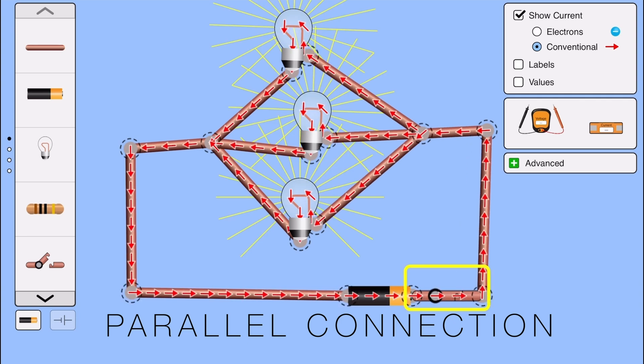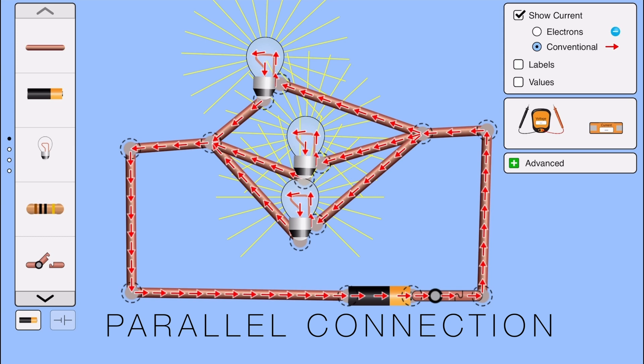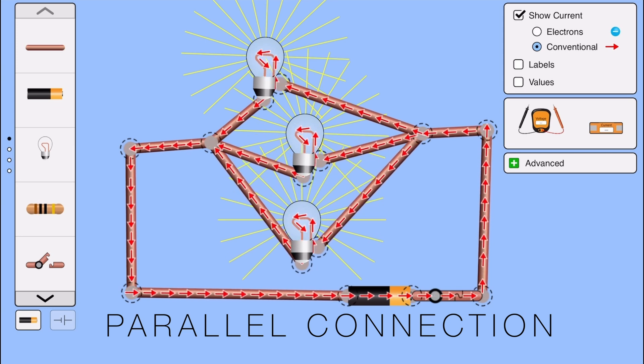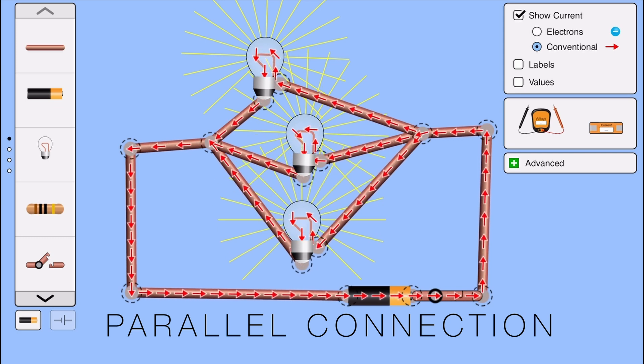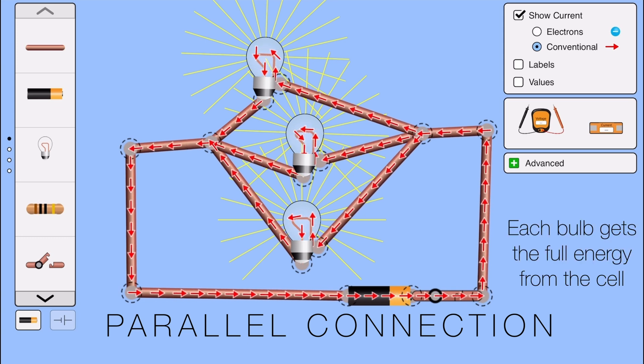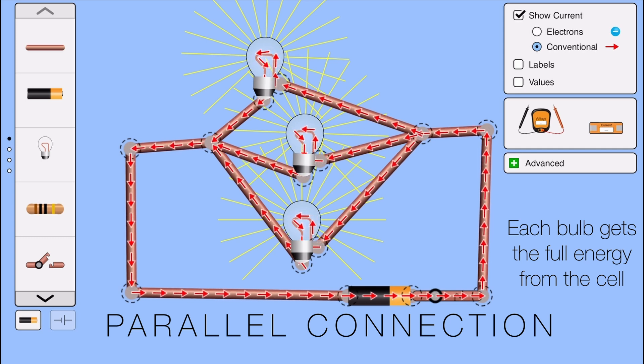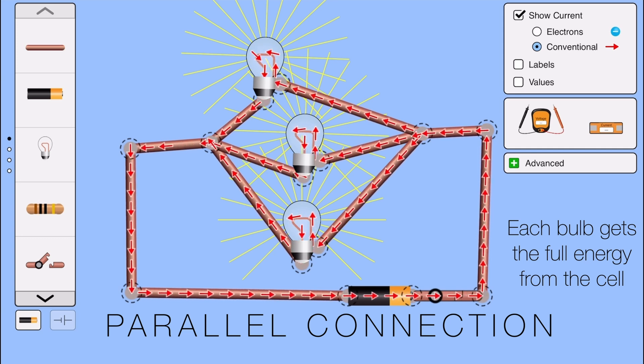Switch it on. Whoa. All the bulbs glow. And look carefully. Each bulb is glowing with just as bright as if it were alone. Amazing, right? Why does this happen? That's because in parallel connection, each bulb gets the full energy from the cell. They don't have to share.